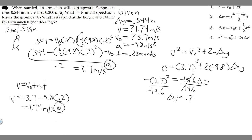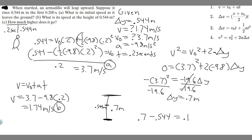So the total distance from the ground to maximum height is 0.7 meters. They're asking how much higher it goes above the 0.544-meter mark — that's this remaining distance. So we take the total distance 0.7 and subtract 0.544: 0.7 minus 0.544 equals 0.156 meters. So 0.156 meters is your answer to Part C. Hopefully you found this useful!